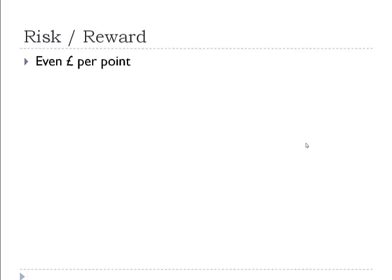To take that one step further: by risking different amounts of money on each trade, you're implying you're more or less confident about each opportunity. If on some trades you risk £100 and on others £200, you're effectively saying you're twice as confident about the £200 trades. That must be the case, otherwise why would you risk twice as much money? But generally speaking, people aren't really more or less confident — it's just a bit lazy, or they don't know what it means.